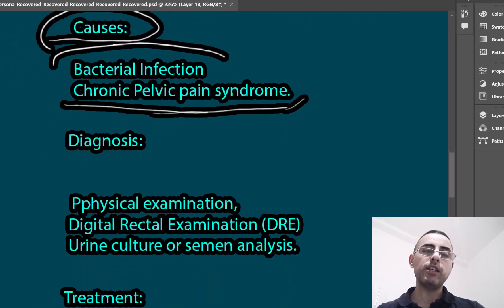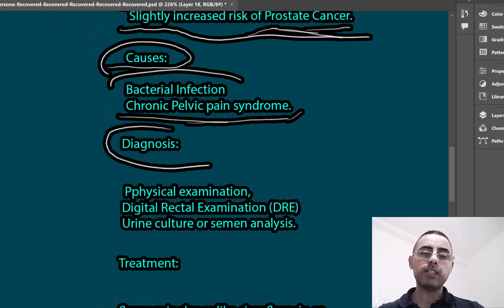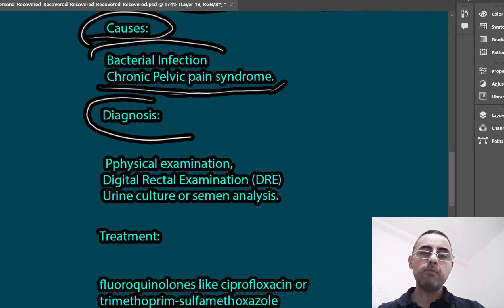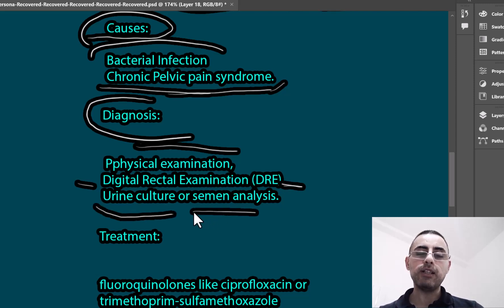To diagnose prostatitis, a physical examination including a digital rectal examination is an important and informative diagnostic method. Urine culture and semen analysis may also be performed if needed.